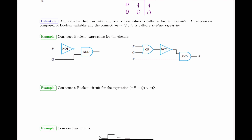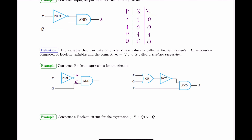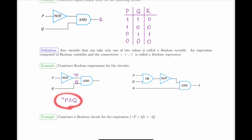Boolean expressions come in very handy in the construction and analysis of combinatorial circuits. With the same circuit as before, instead of constructing the truth table, we construct a Boolean expression — describing the output in terms of the inputs and the gates. P went into the NOT gate, so on the output it becomes NOT P. Q went all the way to the AND gate as itself, arriving as Q. The last operation takes the two inputs and produces NOT P AND Q, which is the Boolean expression describing the output of this combinatorial circuit.